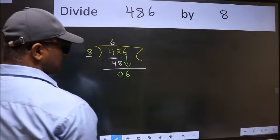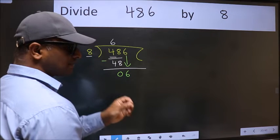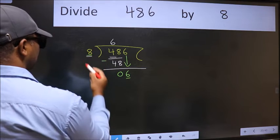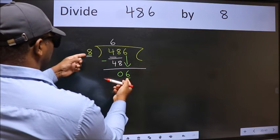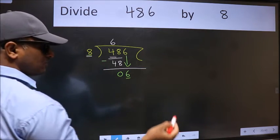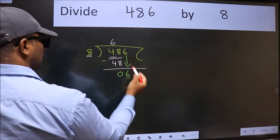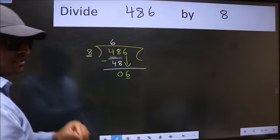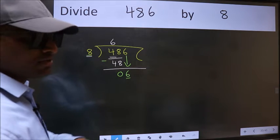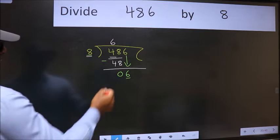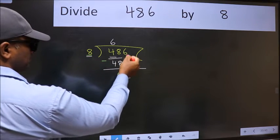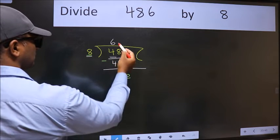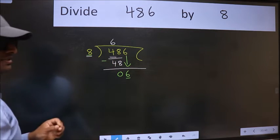After this step, the mistake happens. And the mistake is this: here we have 6 and here 8. 6 is smaller than 8. So what many do is they directly put the decimal point and take 0, which is wrong. Why is it wrong? Because you just brought this number down, and in the same step you want to put the decimal and take 0, which is wrong.